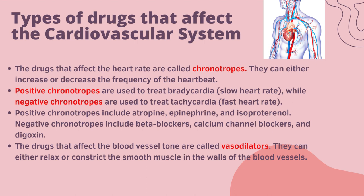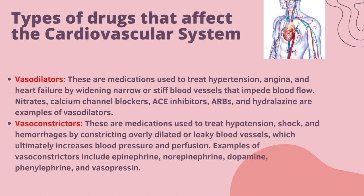Drugs that affect the blood vessels are called vasodilators; they can either relax or constrict the smooth muscle in the walls of blood vessels. Vasodilators treat hypertension, angina and heart failure by widening stiff blood vessels that impede blood flow. Examples include nitrates, calcium channel blockers, ACE inhibitors, ARBs and hydralazine. Vasoconstrictors treat shock and hemorrhage by constricting dilated blood vessels to increase blood pressure and perfusion. Examples include epinephrine, norepinephrine, dopamine, phenylephrine and vasopressin.